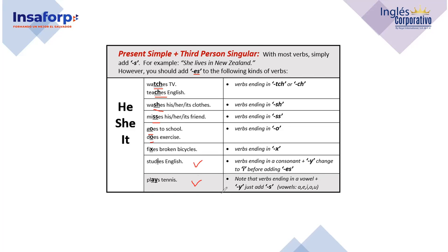The majority of verbs just add -S, but verbs with these special endings need -ES. And 'study' — you drop the Y and add -IES. So the pronunciation changes. The original verb is 'watch,' but with he/she we say 'watches.' 'I teach English' but 'Dalila teaches English.'